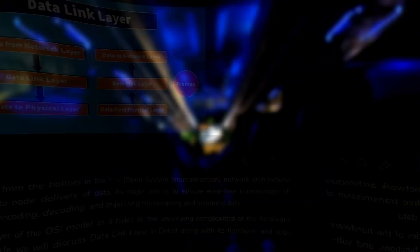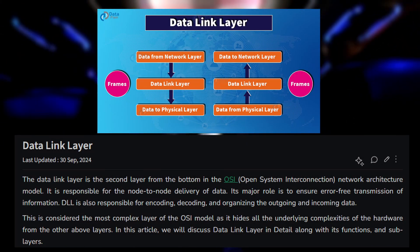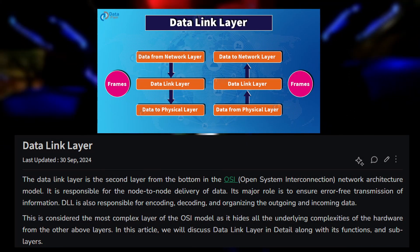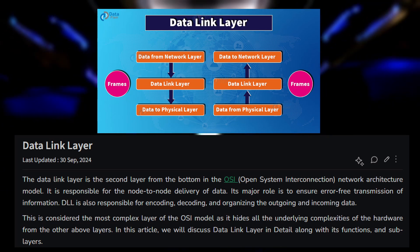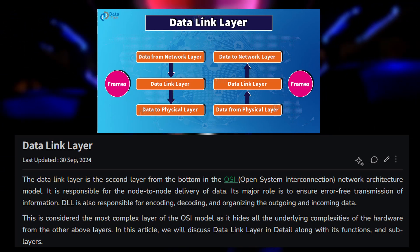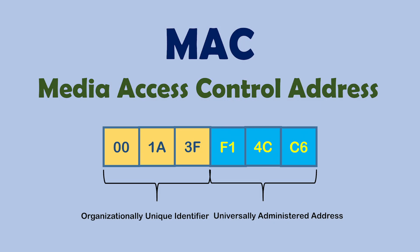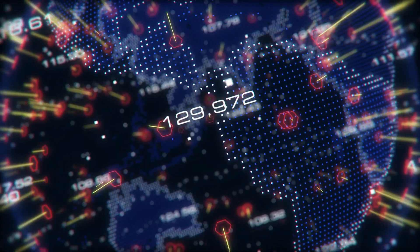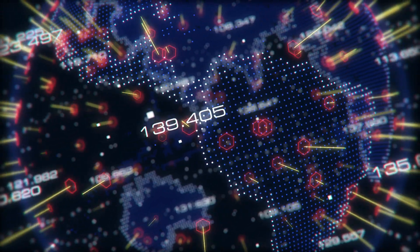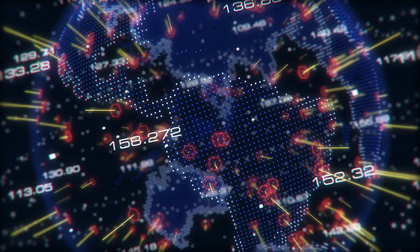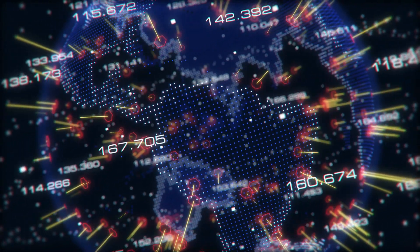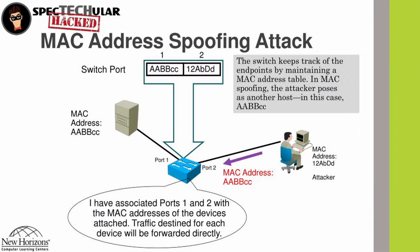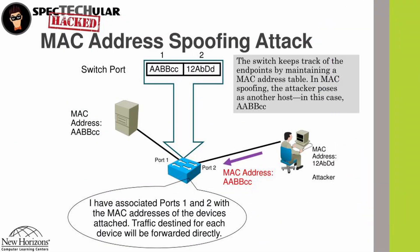Moving up to layer two, we have the data link layer. This layer is responsible for direct communication between devices on the same network, using MAC addresses to identify devices. It ensures that data is error-free as it moves from one device to another. Cybersecurity risks at this layer include MAC spoofing, where an attacker pretends to be a trusted device to gain unauthorized access.